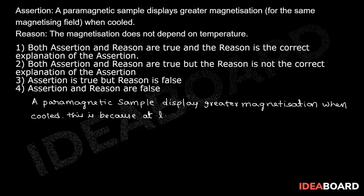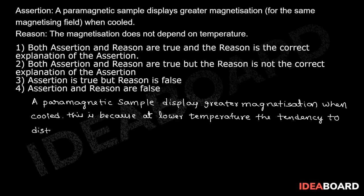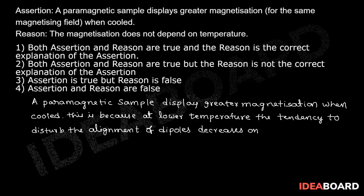At lower temperatures, the tendency to disturb the alignment of dipoles decreases. This is due to the magnetizing field, and on account of reduced random thermal motion, the dipoles align more effectively with the applied field, resulting in greater magnetization.